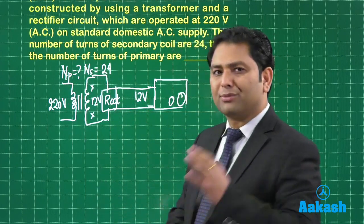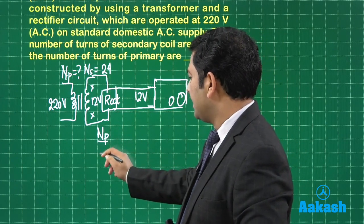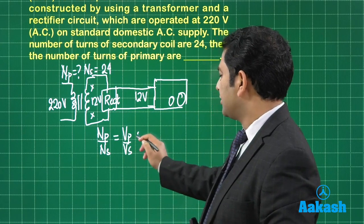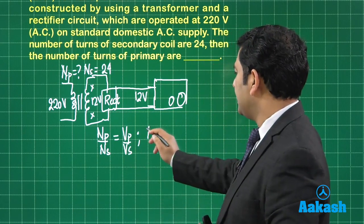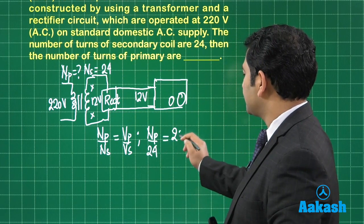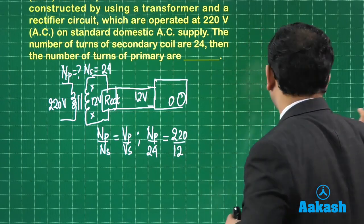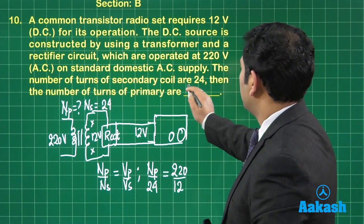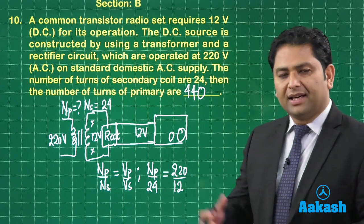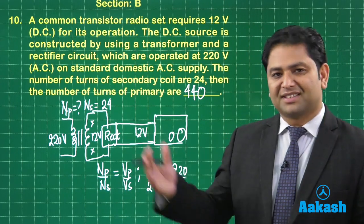So now, the entire thing is simply related to the property of transformer where Np by Ns is equals to V primary by V secondary. Now, let us go, Np I need to find, Ns that is 24. Now, V primary, that is 220 and V secondary, that is 12. So, now, the value of Np comes out to be 440. That's the number of turns of primary and whatever the explanation was required, all have been clearly specified before we discuss this question.